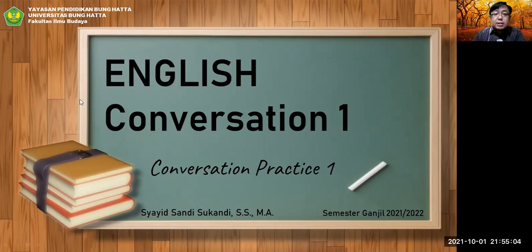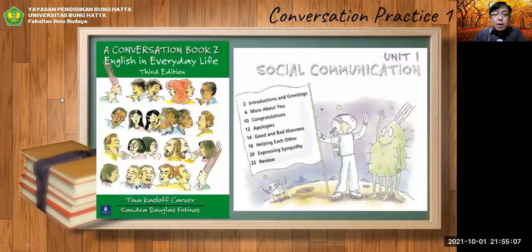The first thing you need to do is deal with Unit One. This is the conversation book — 'English in Everyday Life,' Third Edition. Unit One is titled 'Social Communication,' with subtopics: Introduction and Greetings, More About You, Congratulations, Apologies, Good and Bad Manners, Helping Each Other, Expressing Sympathy, and Review.